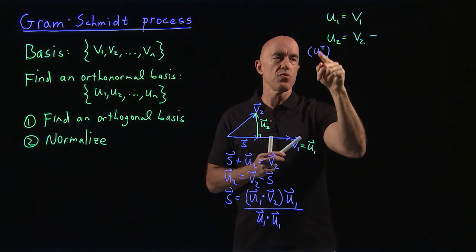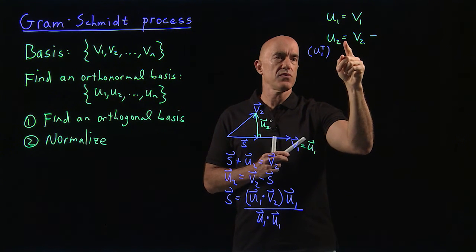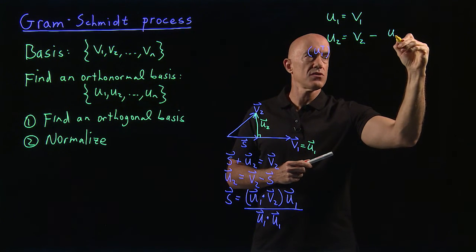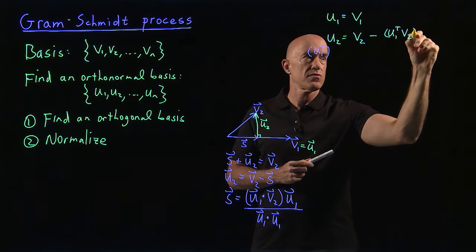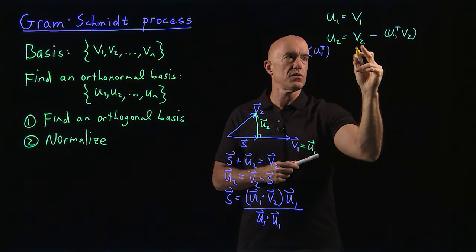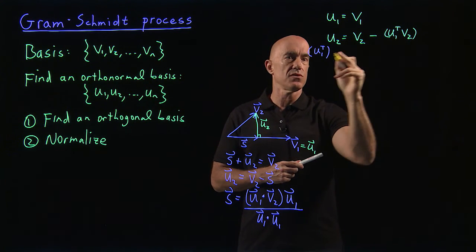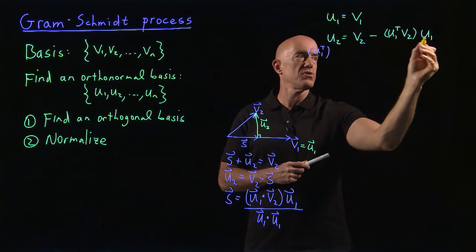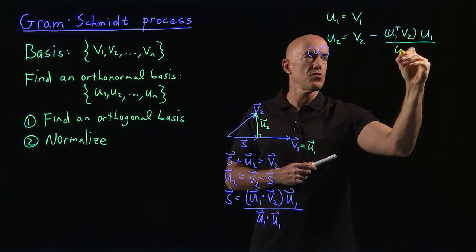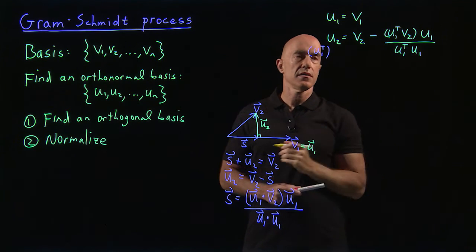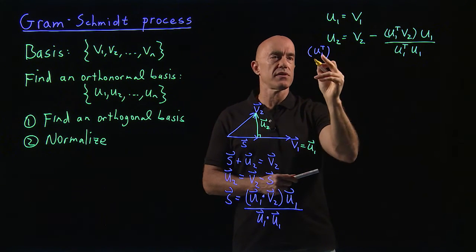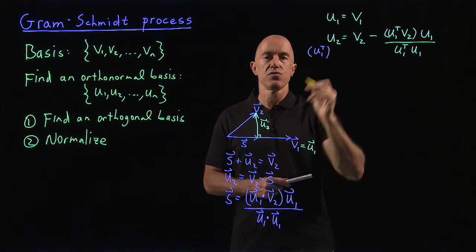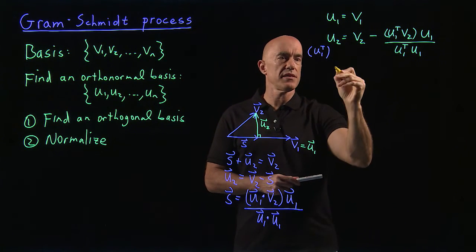So then I want U1 transpose U2 to be 0. That will be equal to U1 transpose V2. So I'm going to subtract U1 transpose V2. That's a scalar, right? So U1 transpose V2 minus U1 transpose V2. And U1 transpose can go into U1. So this is a scalar. So it would be U1 transpose U1. And then I could divide by U1 transpose U1. So this formula here guarantees that U1 transpose U2 is equal to 0. Or U1 and U2 are orthogonal.